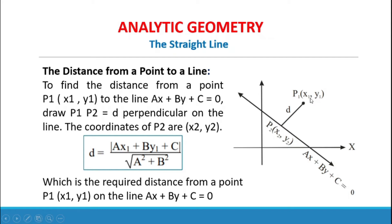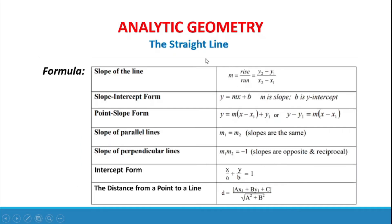From point P₁(X₁, Y₁), draw a perpendicular to the line. The distance D equals the absolute value of AX₁ plus BY₁ plus C over the square root of A squared plus B squared — always a positive value. This gives the required distance from point P₁ to the line AX plus BY plus C equals 0.